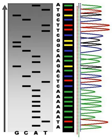In this method, DNA molecules and primers are first attached on a slide or flow cell and amplified with polymerase so that local clonal DNA colonies, later coined 'DNA clusters,' are formed. To determine the sequence, four types of reversible terminator bases are added and non-incorporated nucleotides are washed away. A camera takes images of the fluorescently labeled nucleotides. Then the dye, along with the terminal three-prime blocker, is chemically removed from the DNA, allowing for the next cycle to begin.